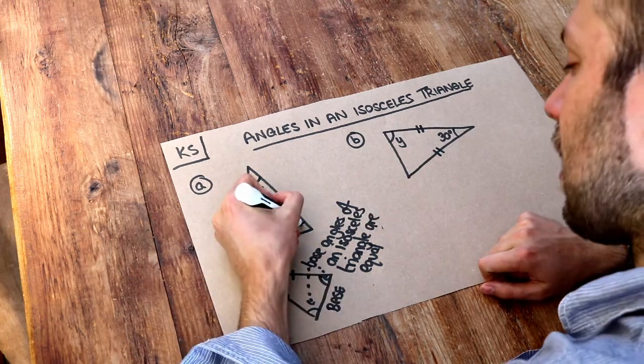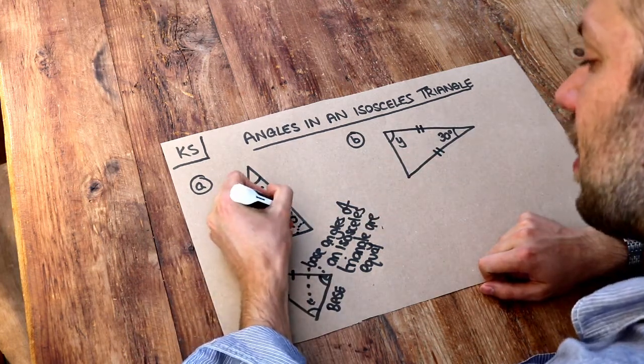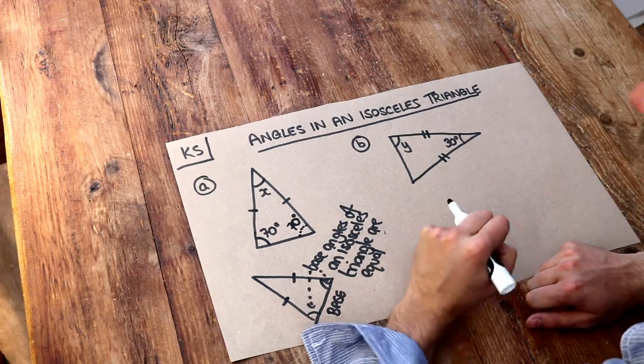So if that angle is 70, that angle here must also be 70 and we know that angles in a triangle add up to 180.